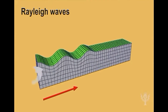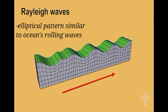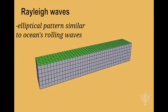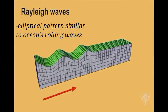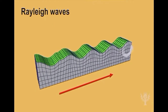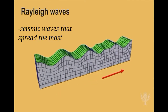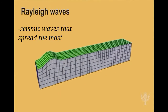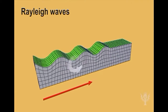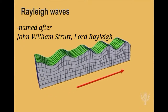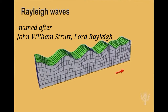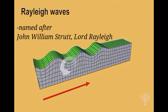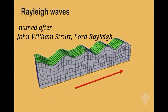Rayleigh waves cause the ground to shake in an elliptical pattern, which is similar to the motion of rolling waves in the ocean. Of all the seismic waves, Rayleigh waves spread the most, giving them a long duration on seismograph recordings. Rayleigh waves are named after John William Strutt, Lord Rayleigh, a British scientist who predicted the existence of this wave.